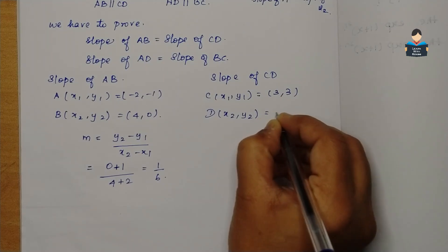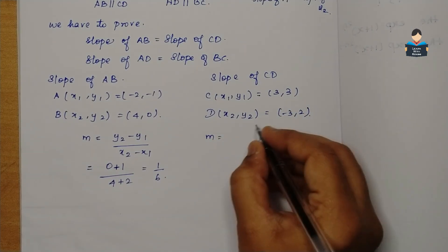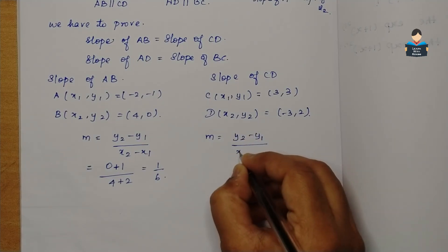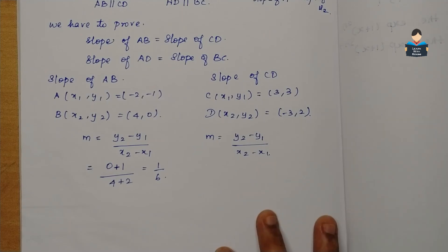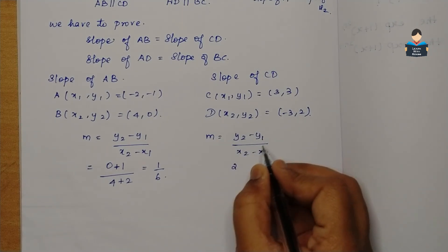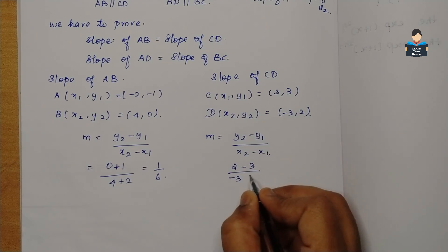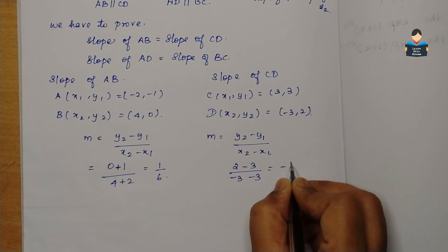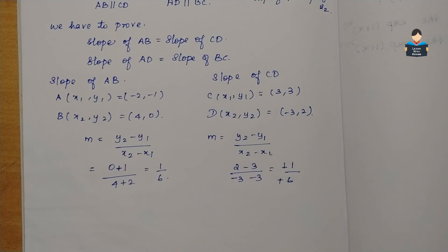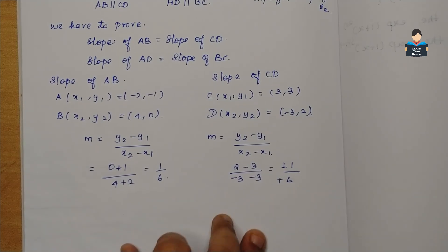Now for slope of CD: x2, y2 from C is 3, 3 and D is minus 3, 2. Substituting the formula y2 minus y1 by x2 minus x1: y2 minus y1 is 2 minus 3, and x2 minus x1 is minus 3 minus 3. So minus 1 by minus 6, the minuses cancel giving 1 by 6. So slope of AB equals slope of CD.